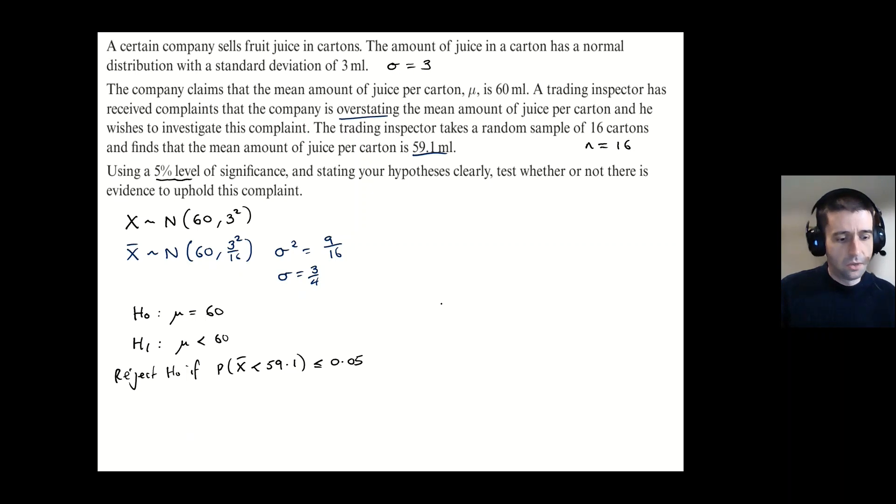So we're going to go into menu 7, normal CD, and it's going to ask us for the lower boundary, which we're going to put in as a really small value. So minus a million tends to do the job. The upper value is going to be 59.1, which is what we're testing against here. The standard deviation I worked out earlier. Now we're using this standard deviation for the sample population or sample normal distribution. And we're going to do the mean of 60. And if I type all that in now, it gives me a probability of 0.1151. So I've calculated that.